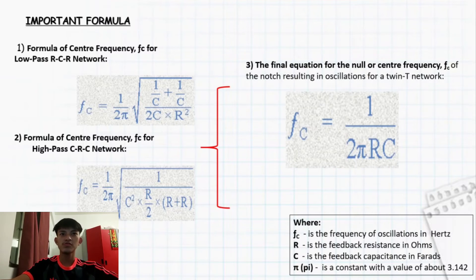So the final equation for center frequency: the final equation for center frequency of the notch resulting in oscillation for twin-T oscillator is obtained by combining low-pass RCR network and high-pass CRC network. It is the combination of these two sets of equations. So the final equation will be: center frequency fc equals 1 over 2π times R times C.